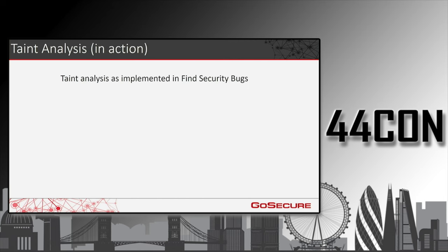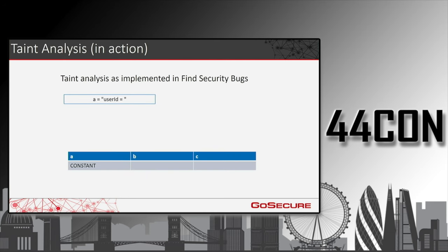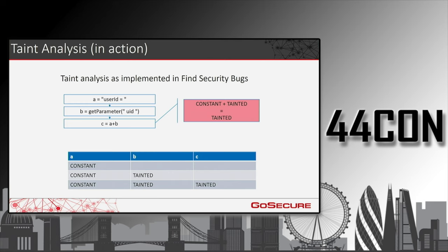Like symbolic execution, here's a step-by-step example of how taint analysis works. First, a variable is initialized with a static string — in FindSecurityBugs this has the state 'constant', considered safe. Then a second variable initialized from getParameter is tainted because it's a known API. We have concatenation of a constant and a tainted variable, resulting in a tainted value. When we reach the applyFilter API — which applies a filter in SQL — we check the state of variable C at that moment and confirm it's tainted, so we report this as a potential vulnerability.